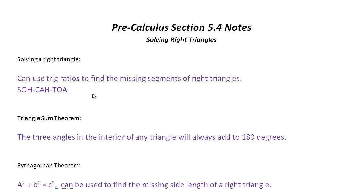A couple of other things we need to remember when dealing with right triangles, or triangles in general, is the triangle sum theorem — which says interior angles always sum to 180 degrees — and the Pythagorean theorem: A² + B² = C², meaning the squares of the two legs combined equal the square of the hypotenuse, used to find missing side lengths.